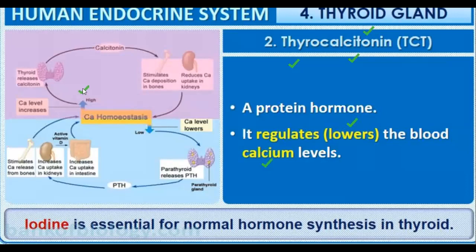When calcium levels are lower in the blood, thyrocalcitonin secretion is low. When calcium amount is low in the blood, the parathyroid hormone helps bring calcium back to the normal level. Iodine is essential for normal thyroid hormone synthesis and for regulating the proper amount of thyroid hormones in our body.